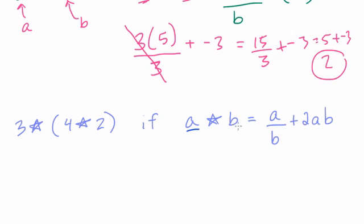What happens here? Well, a and b, a star b, you divide a and b and then you add 2 times a times b. But here we have more than two numbers. So what do we do? Well, we still follow the order of operations, which you might call PEMDAS.